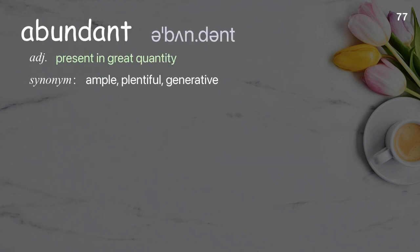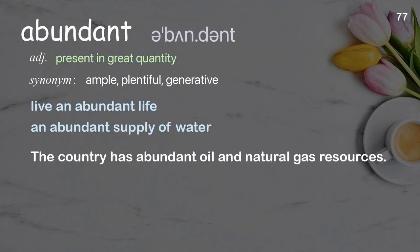Abundant: Present in great quantity. Examples: live an abundant life, an abundant supply of water. The country has abundant oil and natural gas resources.